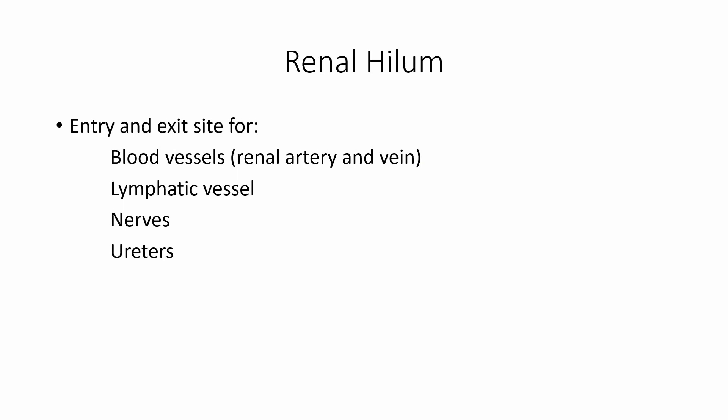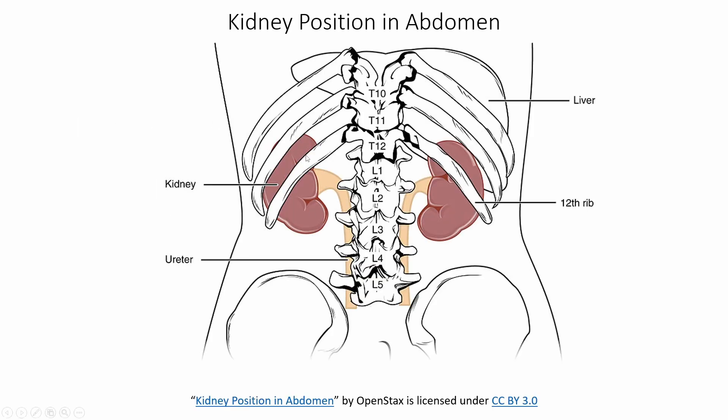Let's talk about the renal hilum. Anytime you see hilum, think of it as where a lot of things are entering and exiting — it's like a main entry-exit point. With the renal hilum, we see blood vessels — namely the renal artery and vein — lymphatic vessels, nerves, as well as the ureters. We saw hilum again with the lungs; the same type of structures exit through that hilum. In the picture, this is the hilum right here where everything connects and exits out.